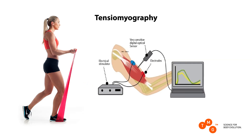The measurement protocol is very simple. It is performed in isometric conditions with the absence of voluntary involvement. To ensure objective, standardized, and repeatable conditions, bipolar electrical stimulation is used to evoke muscle contraction. The duration of a single DC electrical impulse is 1 millisecond. The electrical amplitude in milliamps is gradually increased until the supermaximal response is reached. The optical digital sensor placed over the muscle belly records the deformation of the muscle belly in the radial direction. The signal and TMG parameters are immediately displayed within the TMG software.